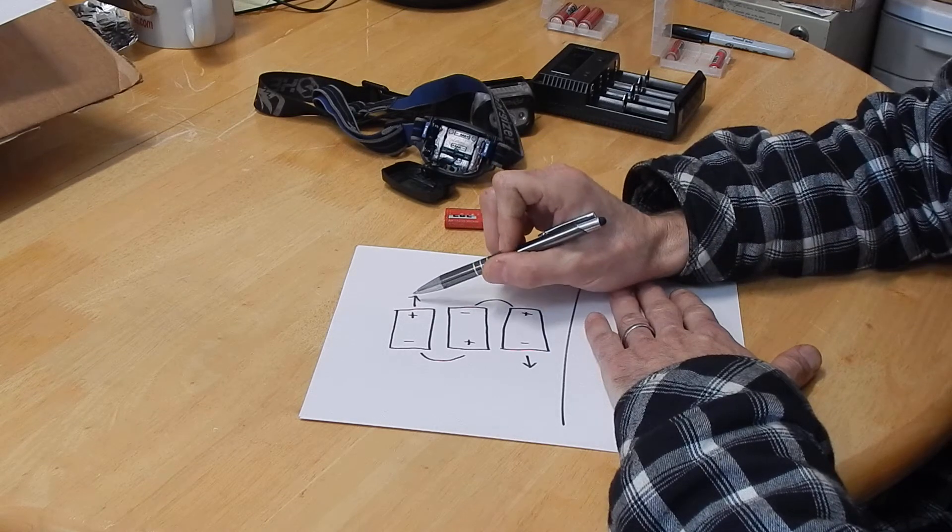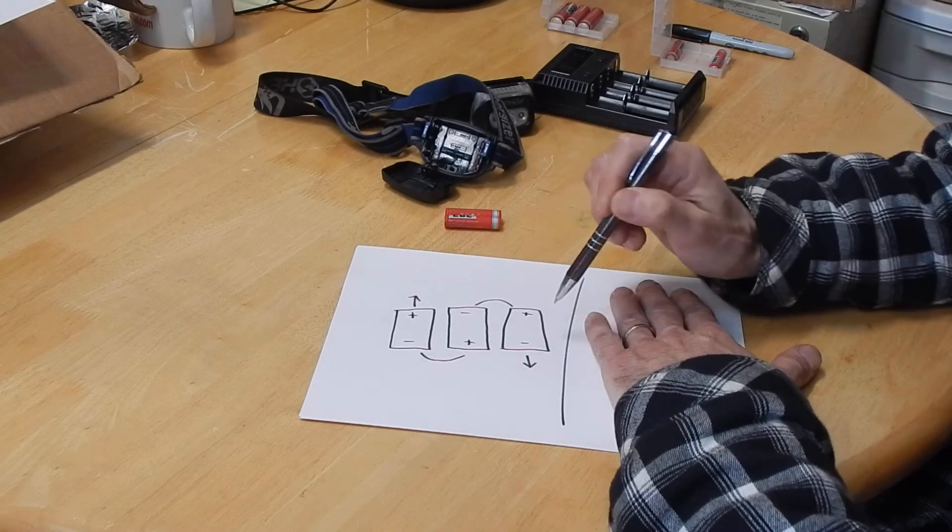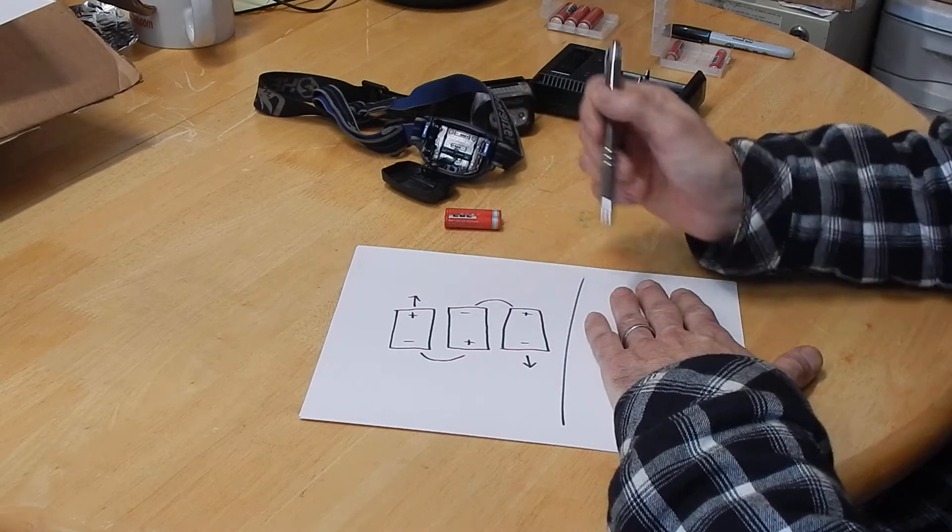You have the positive out to the circuit, you have the negative out to the circuit, and the other connections are just between the batteries to connect them in series.